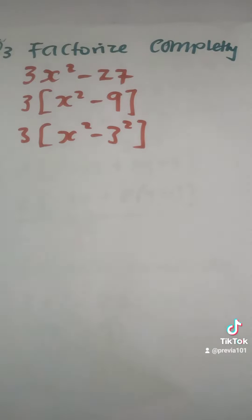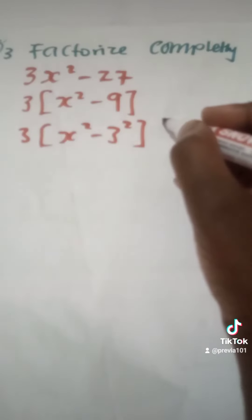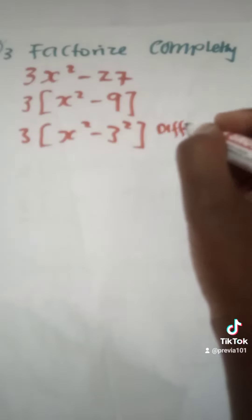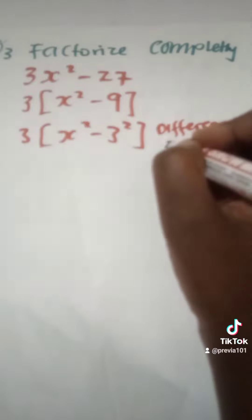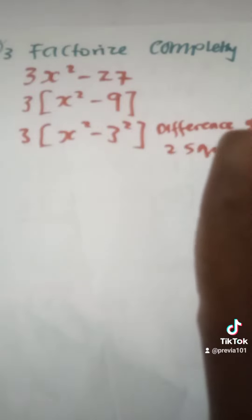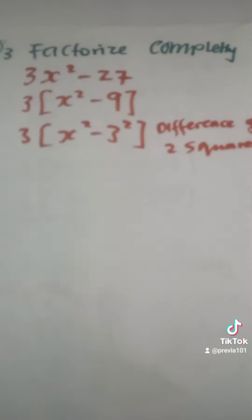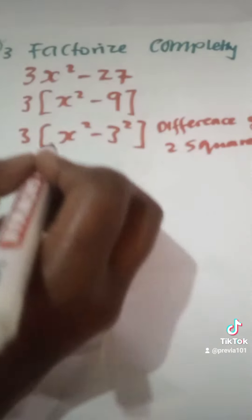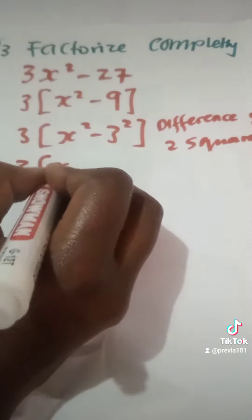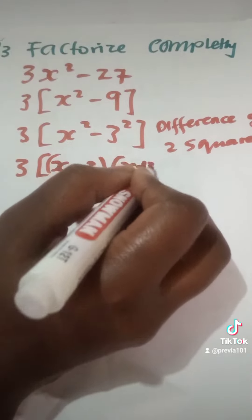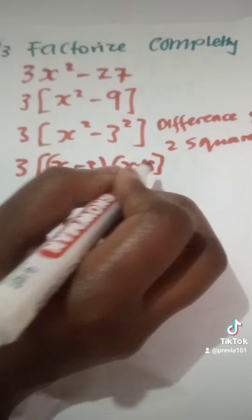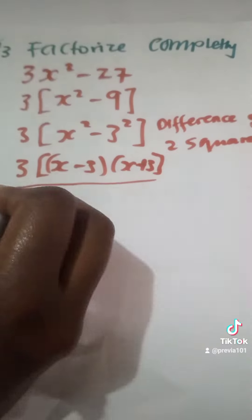You have not changed anything — it is still the same expression. What is in the brackets is what you call the difference of two squares. When you have a difference of two squares, the expression in the brackets becomes (x minus 3)(x plus 3). This concludes it.